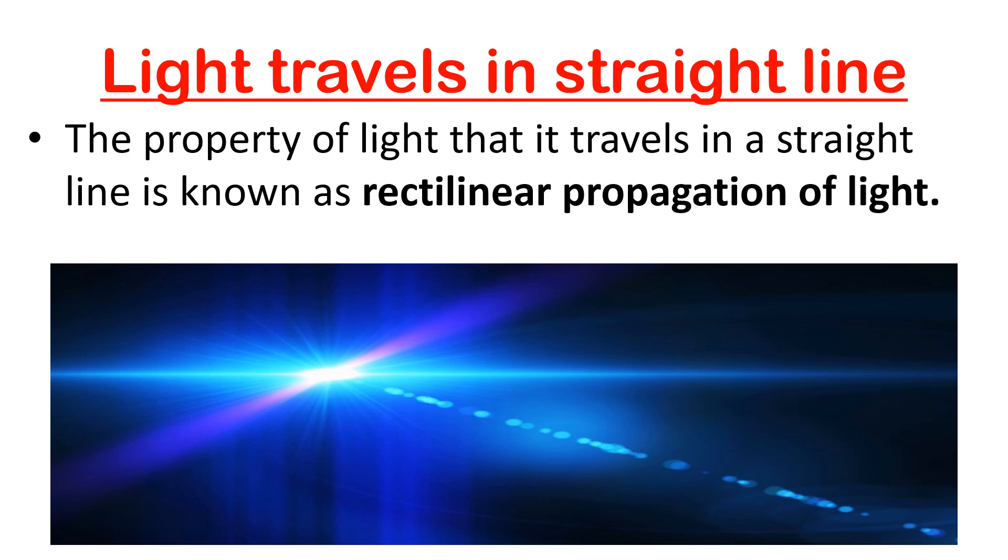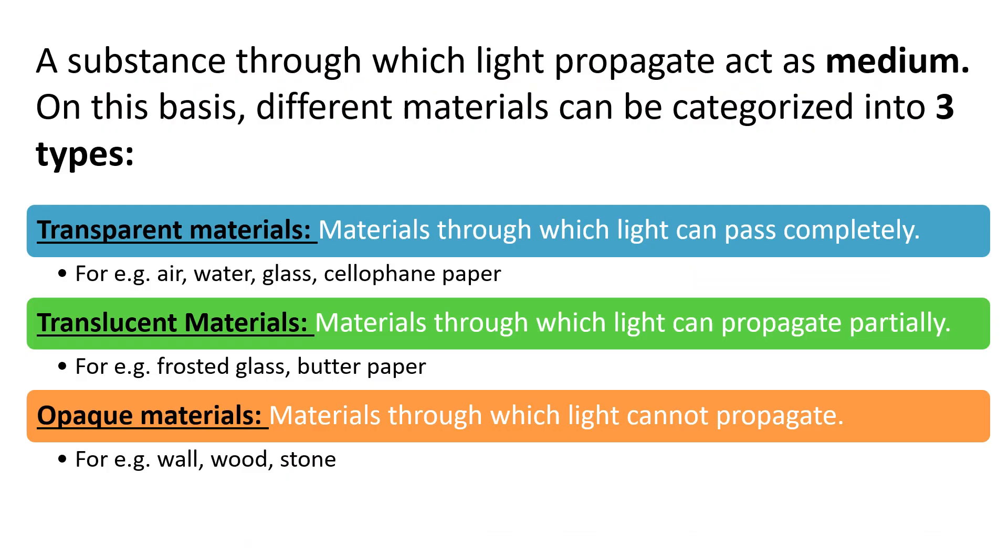Another important property of light: it travels in a straight line, known as the rectilinear propagation of light. A substance through which light propagates acts as medium. On this basis, different materials can be categorized into three types.